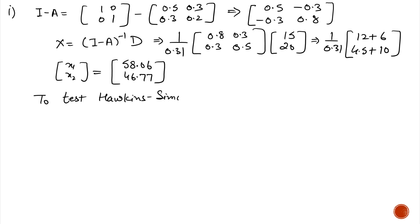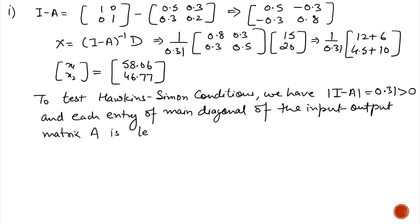Next, to test Hawkins-Simon condition, first we calculate the determinant of I minus A, which equals 0.31, which is positive, and each entity of the main diagonal of the matrix A is less than 1. Hence, Hawkins-Simon conditions are satisfied.